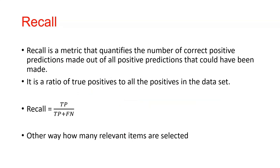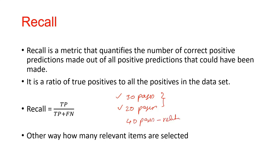Recall is a metric that quantifies the number of correct positive predictions made out of all positive predictions that could have been made. It is the ratio of true positives to all the positives in the dataset. Using the same search engine example: the engine provided 30 pages, out of which 20 are relevant, but there are actually 40 additional relevant pages that the search engine did not return.